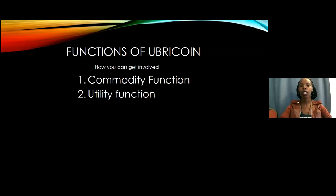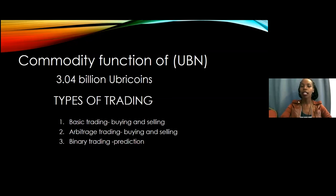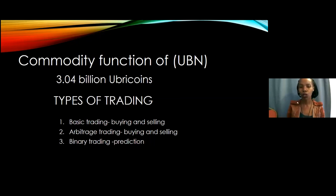Ubicoin has two functions, and in these two functions lies your opportunity to get involved. The first function is a commodity function and the second is a utility function. In its commodity function, Ubicoin can do three things: it can be traded through basic trading, arbitrage trading, and binary trading.